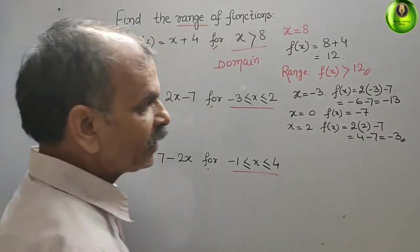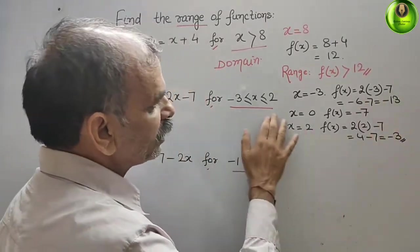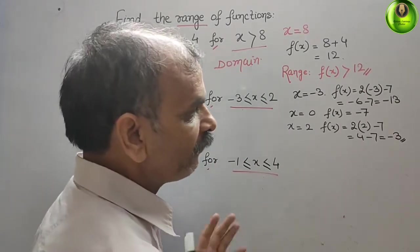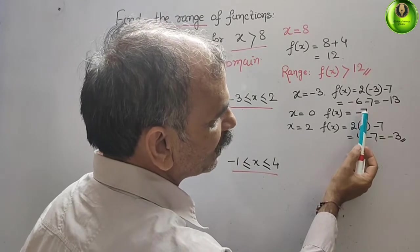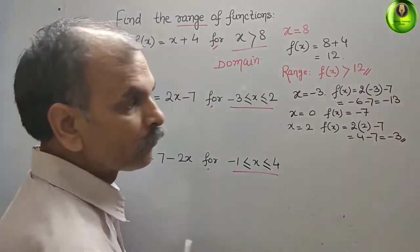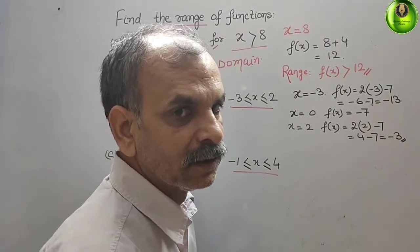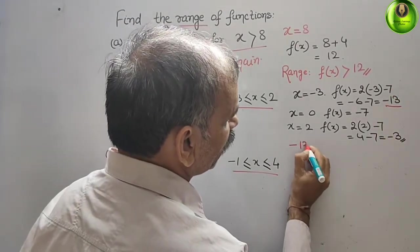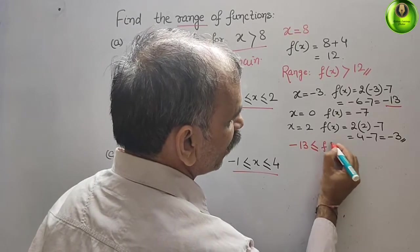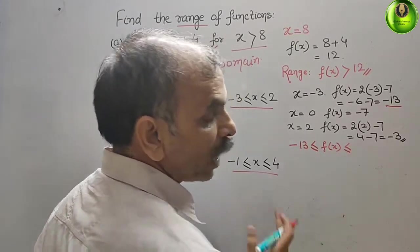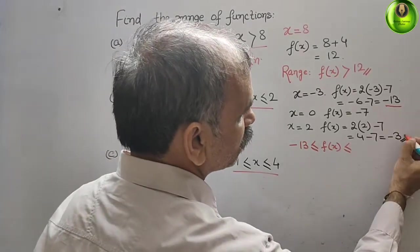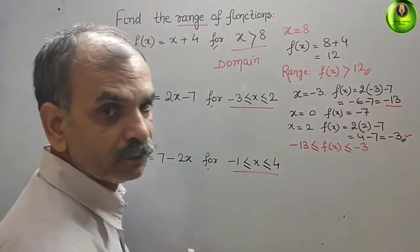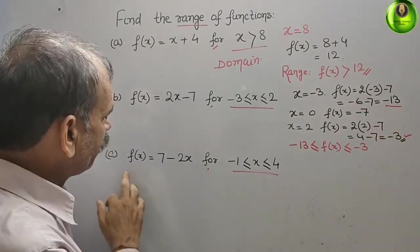Now we have to write these values as a range. You can see the minimum value: looking at -7, -13, and -3, whichever is less — -13 is the least. So we write -13 ≤ f(x). The maximum value is -3, so the range is -13 ≤ f(x) ≤ -3.